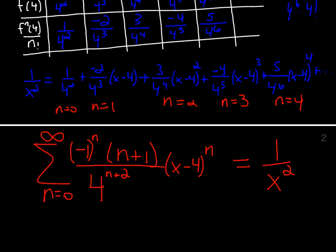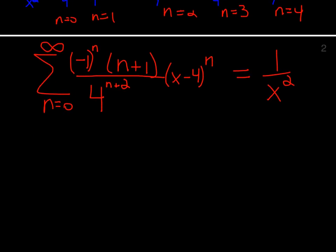And so, for what values of x is it valid for? That's us finding the interval of convergence. We'll find the interval of convergence by taking the limit as n goes to infinity of a sub n plus 1 divided by a sub n in absolute value.